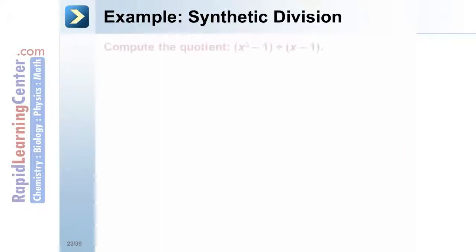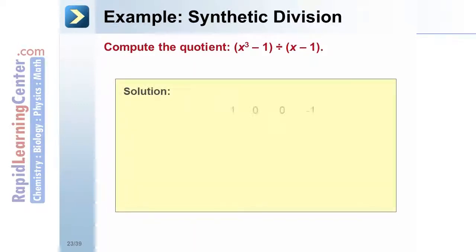Example: Synthetic division. Compute the quotient of quantity x cubed minus 1 divided by quantity x minus 1. Solution: 1. Write the coefficients of the dividend to the right and the zero or root of the divisor to the left. The coefficients are 1, 0, 0, and negative 1. The root is 1. 2. Draw a line leaving space for the second row, then bring the leading coefficient of 1 to the third row beneath the line. 3. Multiply the root, 1, by the value on the bottom row and place it on the second row beneath the next coefficient. 1 times 1 is 1.